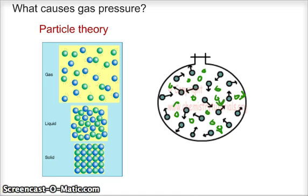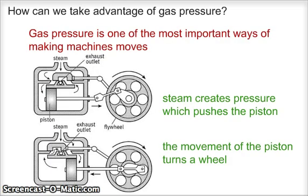So now we're experts on gas pressure. Let's move on and talk a little bit about how we can use gas pressure in our everyday life. How can we take advantage of gas pressure? Just like your book says, gas pressure is one of the most important ways of making machines move. And one of the major inventions in the Industrial Revolution was the steam engine, which you may have talked about in history class, but perhaps you don't understand the science behind it. So let's talk a little bit about how a steam engine works.